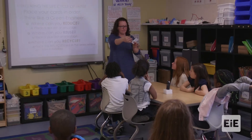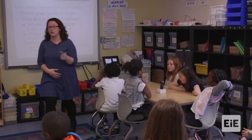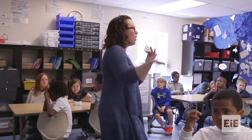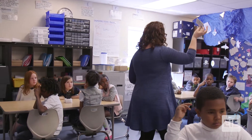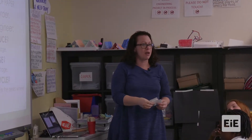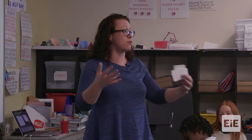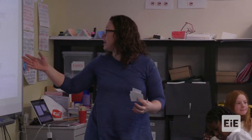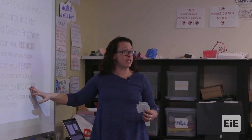Each group is going to get a set of cards — two cards per table — so you'll work half and half. These are all the steps of the life cycle from raw material all the way back to raw material. They're labeled and numbered. You'll have about 10 minutes to look through the life cycle of paper and decide as a team where you can reduce, reuse, and recycle.